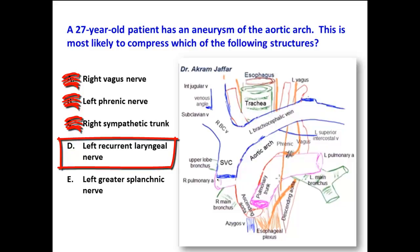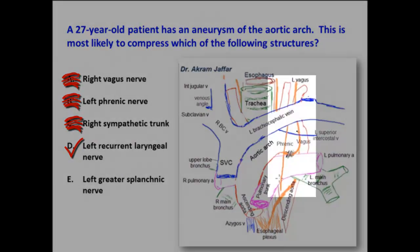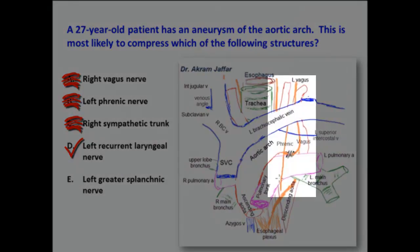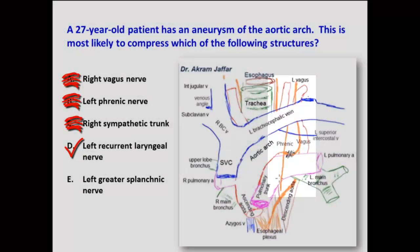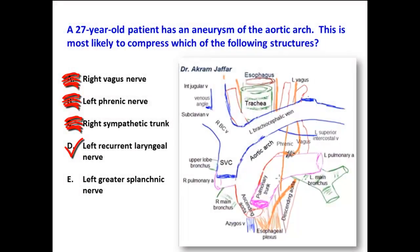Option D: the left recurrent laryngeal nerve. This would be the correct option because the left vagus nerve, as it reaches the ligamentum arteriosum, gives off the left recurrent laryngeal nerve, which passes on the posterior aspect of the ligamentum arteriosum and then curves upwards on the posterior aspect of the arch of the aorta to find itself in the groove between the trachea and esophagus, and ascends upwards into the larynx.